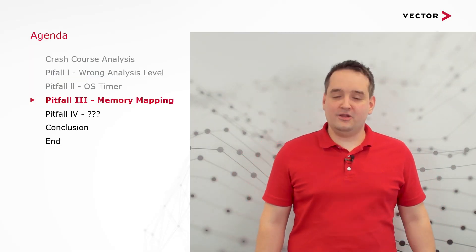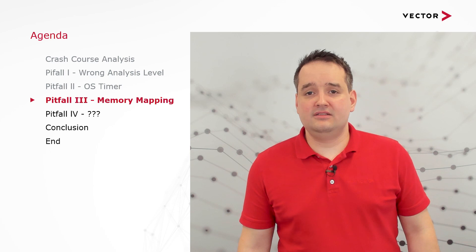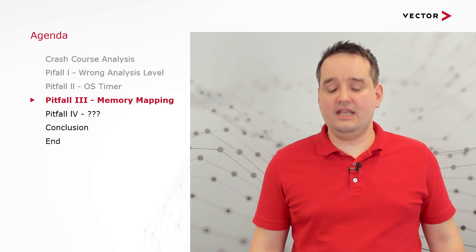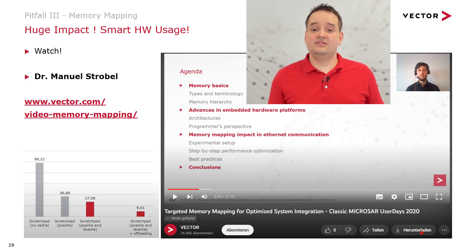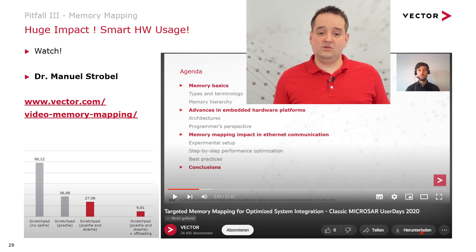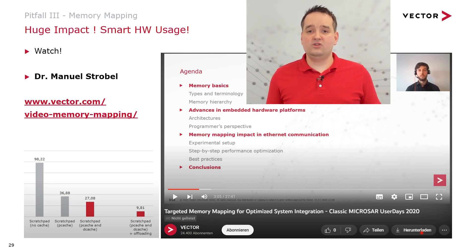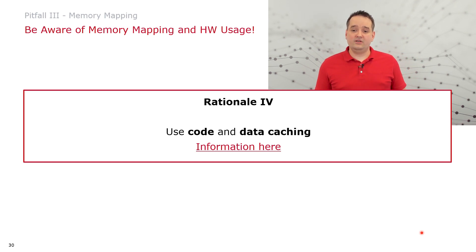Now let's move to our third pitfall: memory mapping. Often in projects facing runtime issues, we discuss where the code and data are linked to, because the hardware offers features such as data and code caching. You can check the linked video below — my colleague Manuel Strobel made a presentation about memory basics showing a use case sped up by 90% only by manipulating linker files. The rationale: use the code and data caching features of your hardware if available.